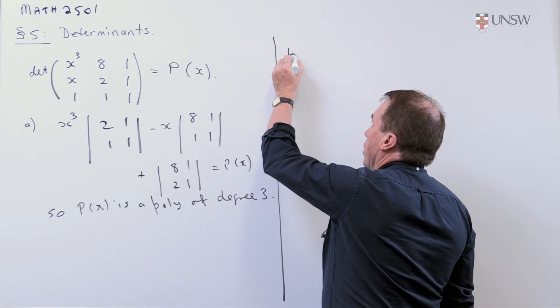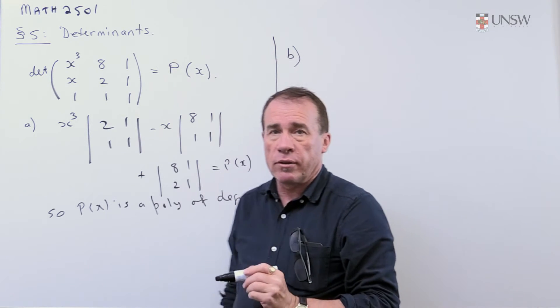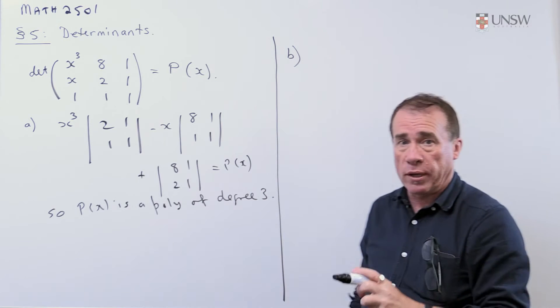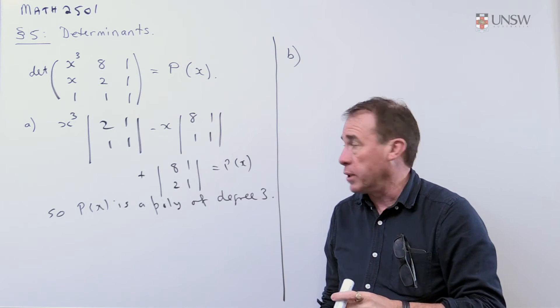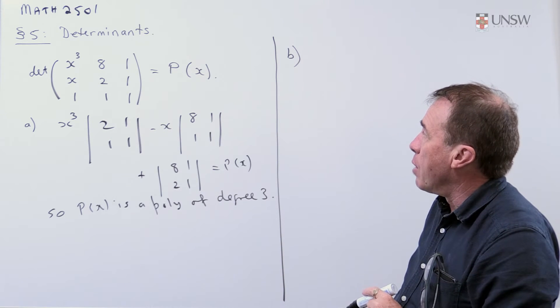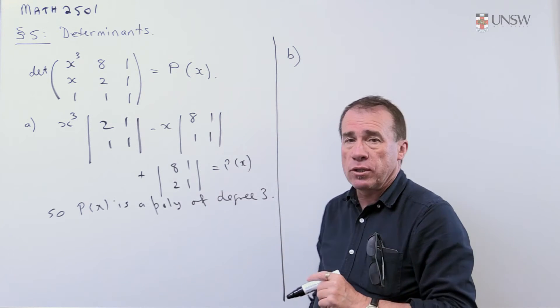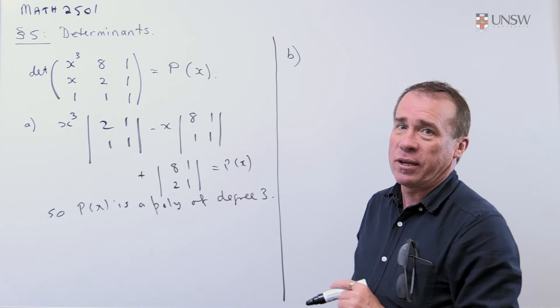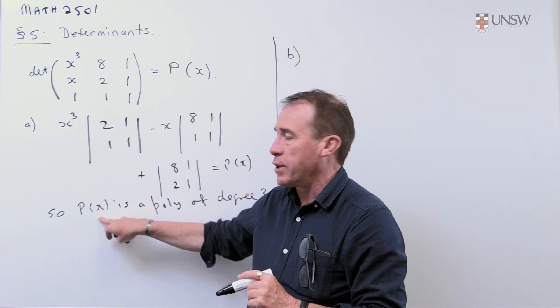So if it's a polynomial, then immediately you're thinking, well, polynomials have roots, and if I can find out what the roots of the polynomial are, I know what the polynomial is completely. And so part B says, pick some values of x that make the determinant 0. That's another way of saying, find some of the zeros of this polynomial.